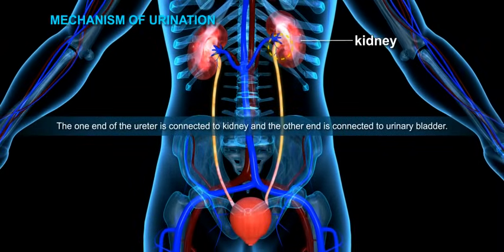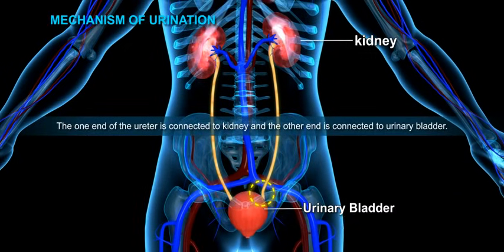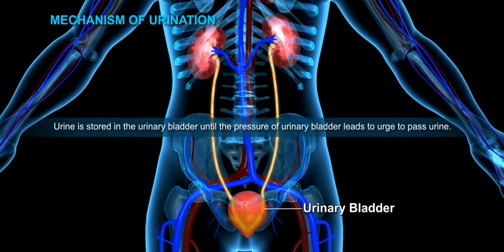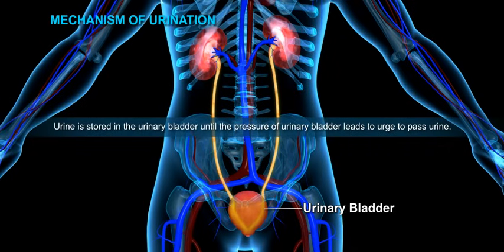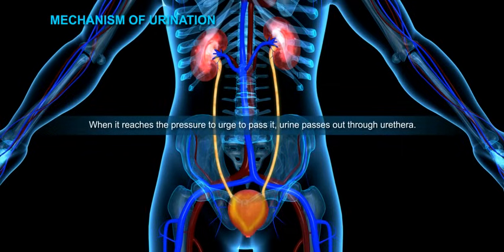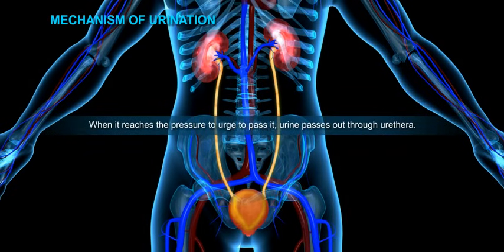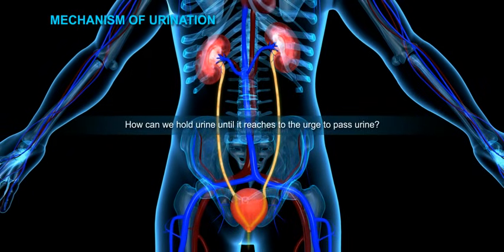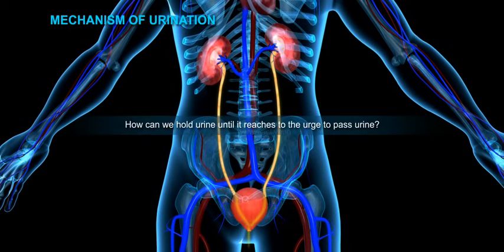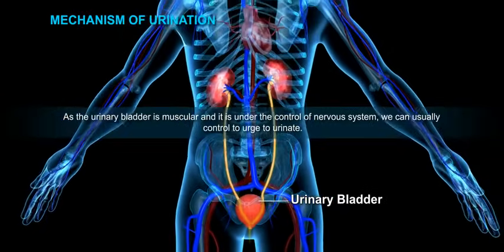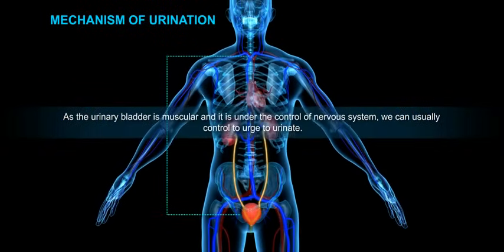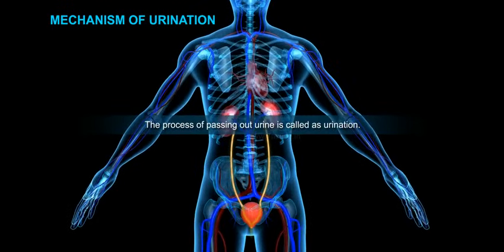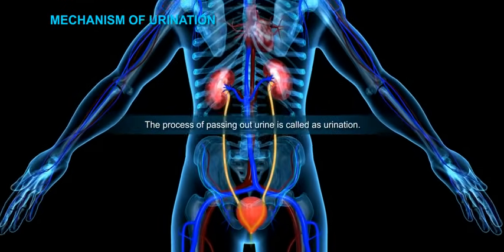One end of the ureter is connected to the kidney and the other end is connected to the urinary bladder. Urine is stored in the urinary bladder until pressure builds up, creating an urge to pass urine, at which point urine passes out through the urethra. Since the urinary bladder is muscular and under the control of the nervous system, we can usually control the urge to urinate. The process of passing out urine is called urination.